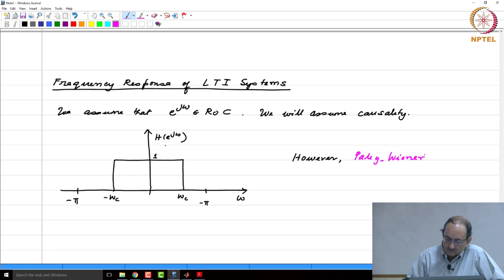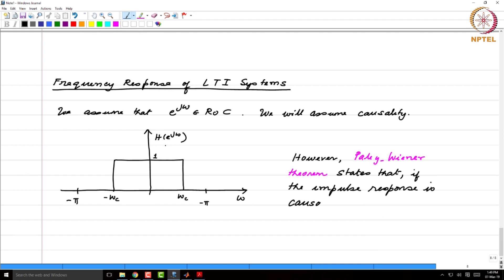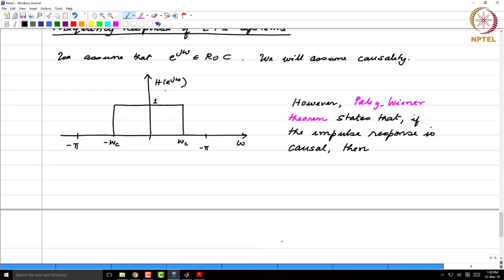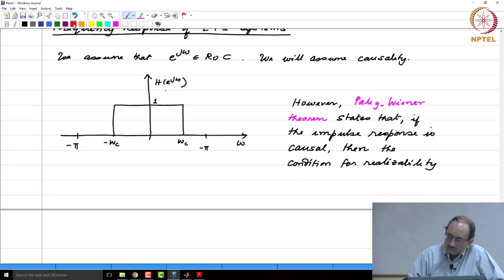Paley-Wiener theorem states that if the impulse response is causal, ideal, then the condition for realizability rules out ideal filters.